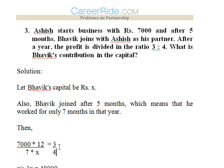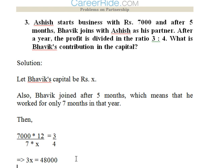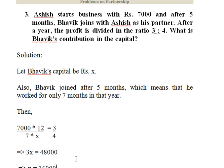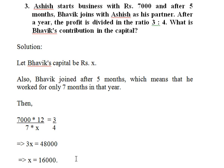Their share in the profit is 3:4, so the equation can be set up as 7000 × 12 : 7X = 3:4. Solving, 3 × 7X = 4 × 7000 × 12, giving 3X × 7 = 48000 divided appropriately, so X = 16,000. Hence Bhavik's contribution in the capital is rupees 16,000.